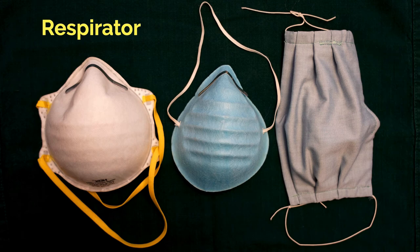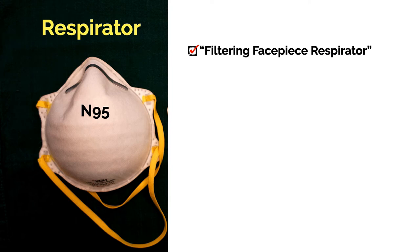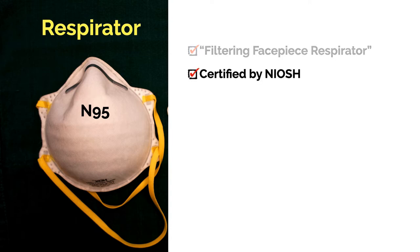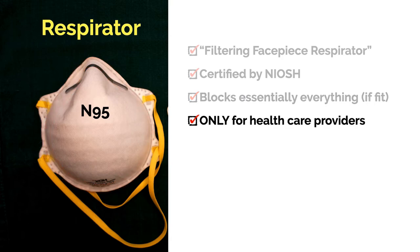There are three basic kinds of masks: respirators, surgical masks, and consumer masks. The respirator is technically called the filtering facepiece respirator; the most common one you'll see is called the N95. These are certified by the National Institute for Occupational Safety and Health. As long as they are fit properly, they block essentially anything you would worry about. But being fit properly is the trick, because the seal has to be airtight. In healthcare settings, when people get their N95s, others check to make sure they're airtight — this is called fit testing. These are very hard to find and really should be reserved for healthcare providers dealing with sick people.